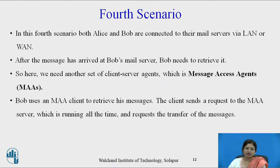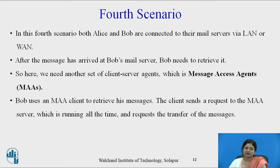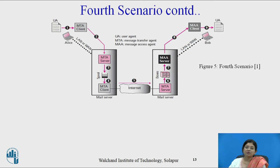Now look at the fourth scenario. In this fourth scenario, both Alice and Bob are connected to mail servers via LAN or WAN. After the message has arrived at Bob's mail server, Bob needs to receive it, but here we need another set of client-server agents known as the message access agent, abbreviated as MAA. Bob uses an MAA client to retrieve his message. The client sends a request to the MAA server, which is running all the time, and requests the transfer of messages. This is the most popular scenario used today.